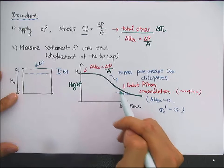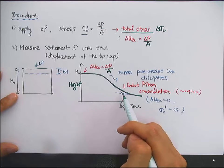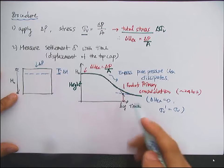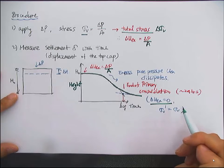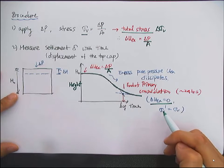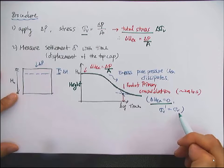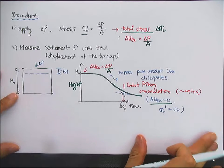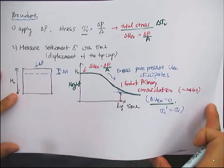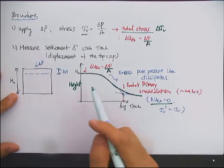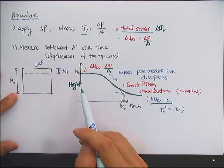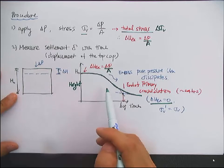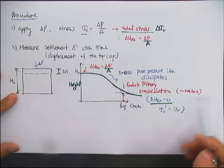Then you'll have the end of primary consolidation. At this point, you have zero excess pore pressure, and the vertical effective stress will be equal to the total stress. In general, in the standard procedure, for a given loading, we wait about 24 hours.